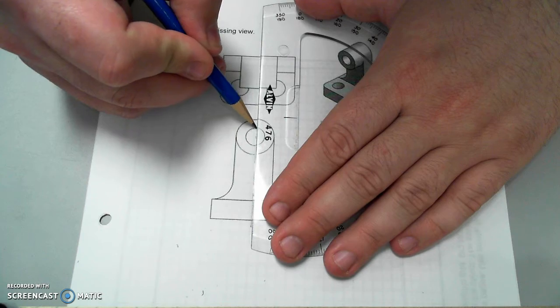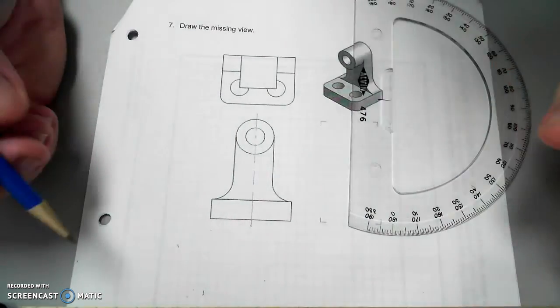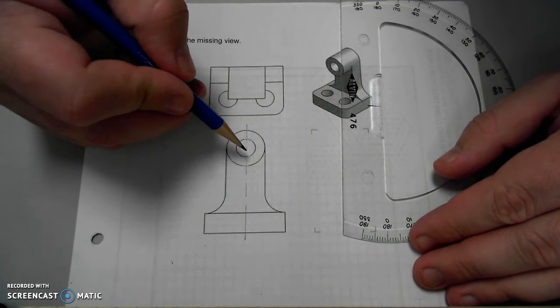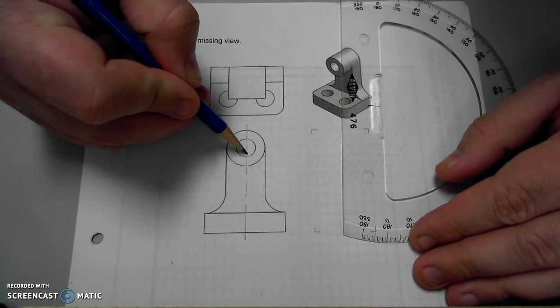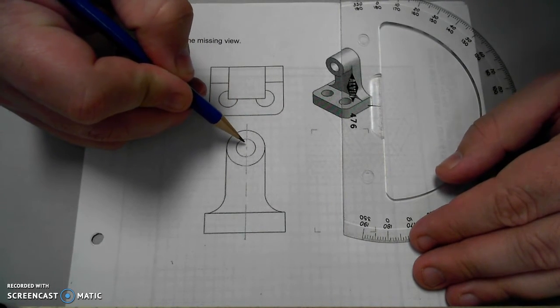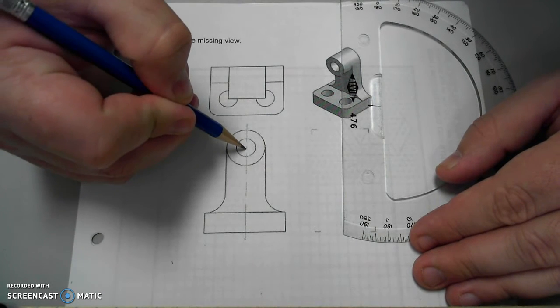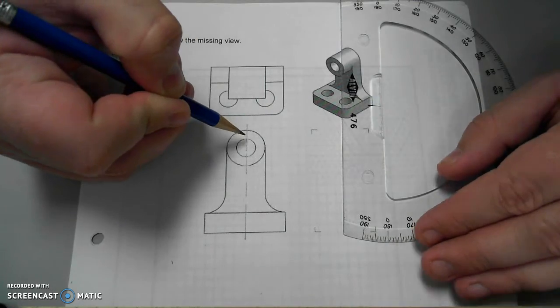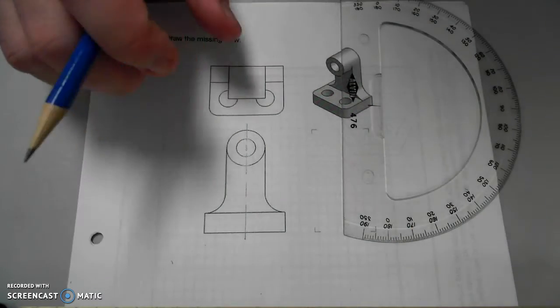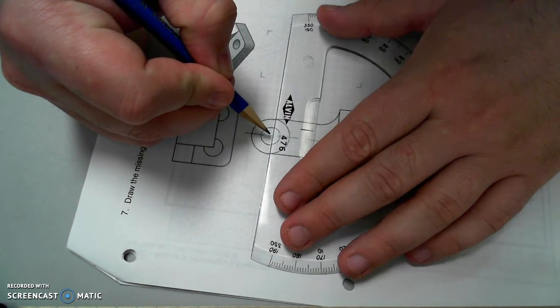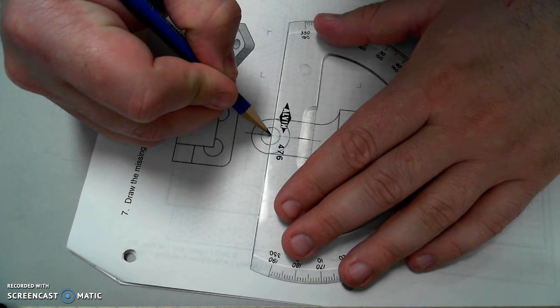And the reason being is that the object itself is symmetrical left to right in this view. And right here, I want to be able to have a short, just like I did here, long, short, long, and a long, short, long, so that I can cross that to make a center mark for the center of this hole and cylindrical feature.